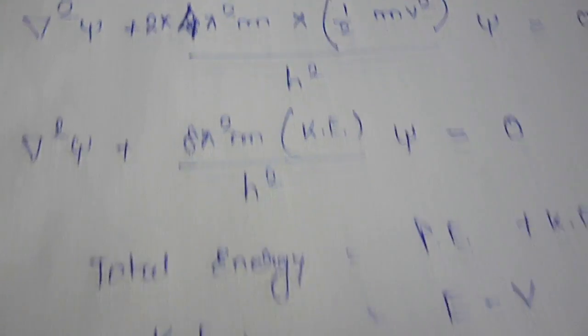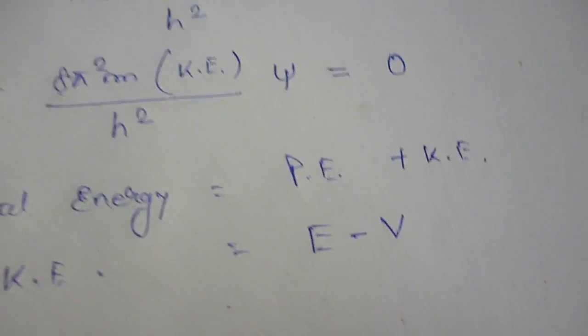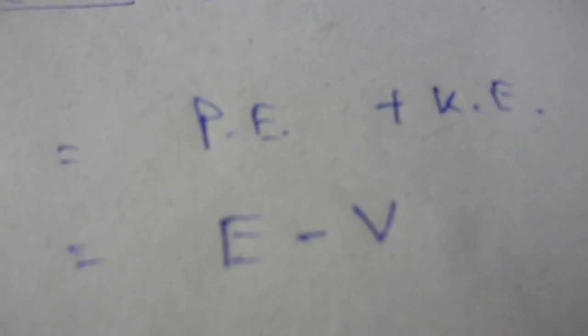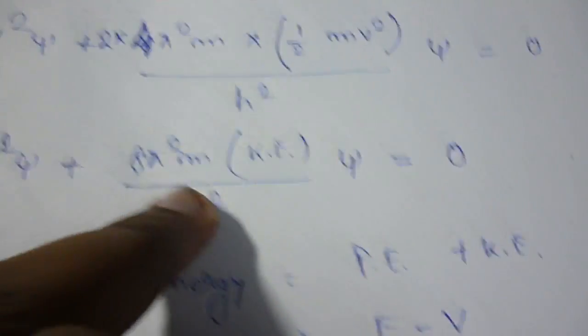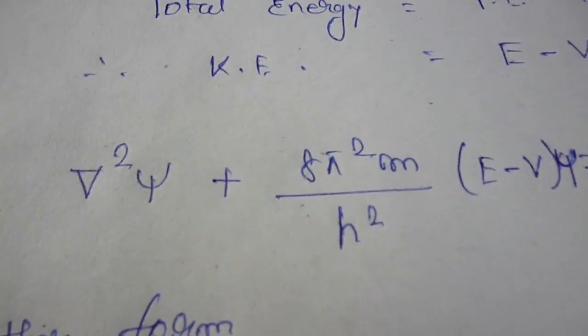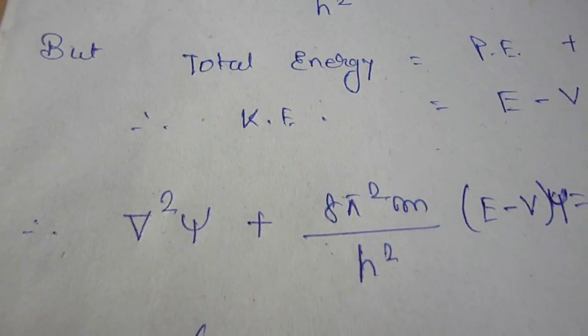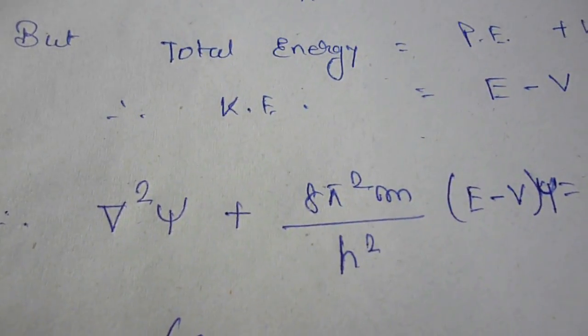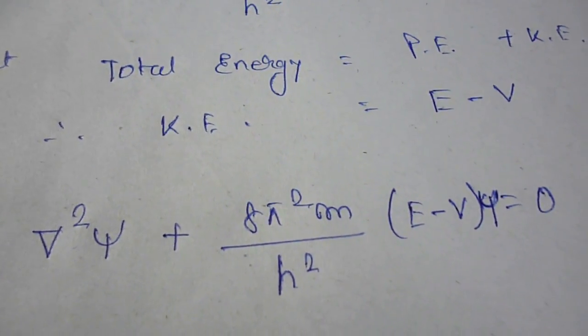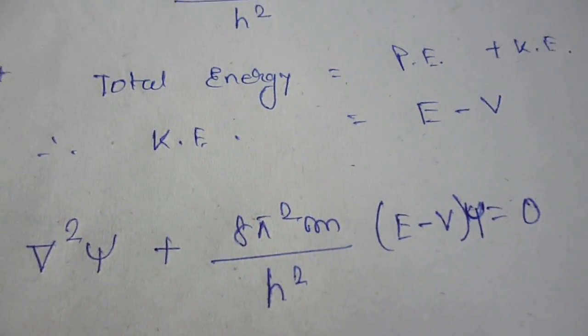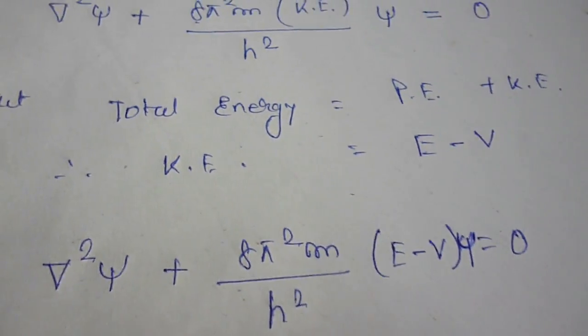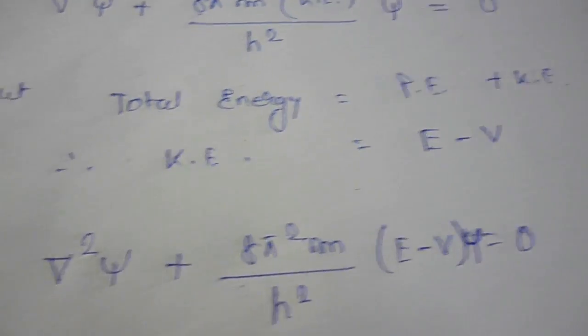So now we can replace kinetic energy by writing as total energy minus potential energy E minus V. So just put this value to here and we get this equation. That shows del²ψ plus 8π²m/h² (E minus V) ψ is equal to 0. So this is also a form of Schrodinger wave equation.